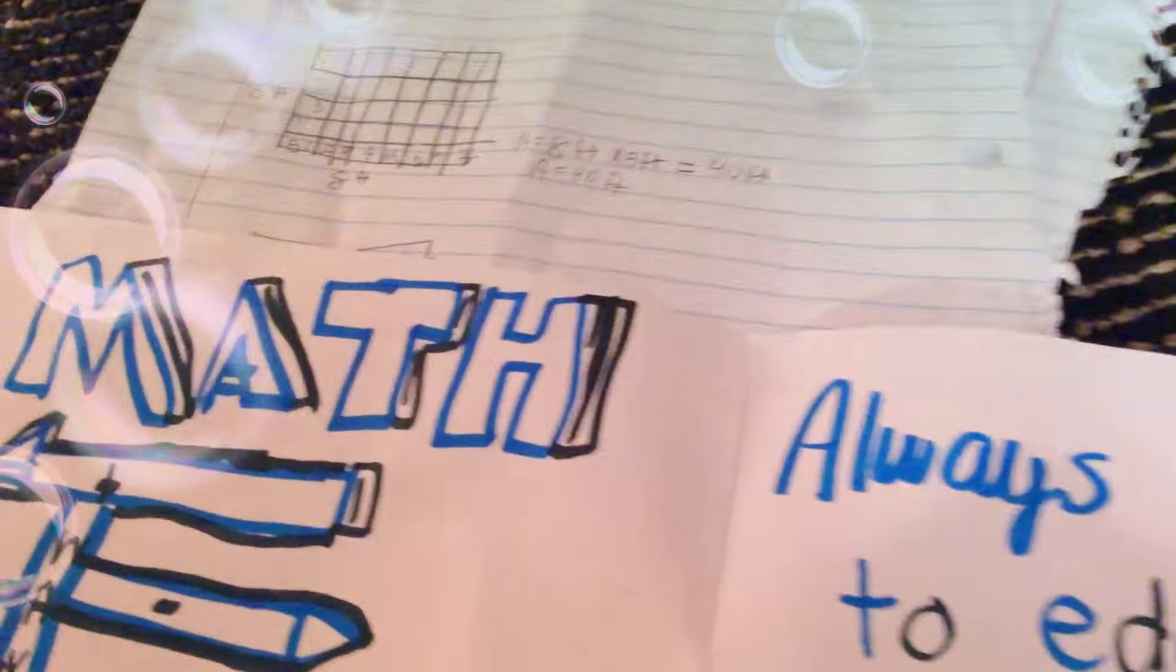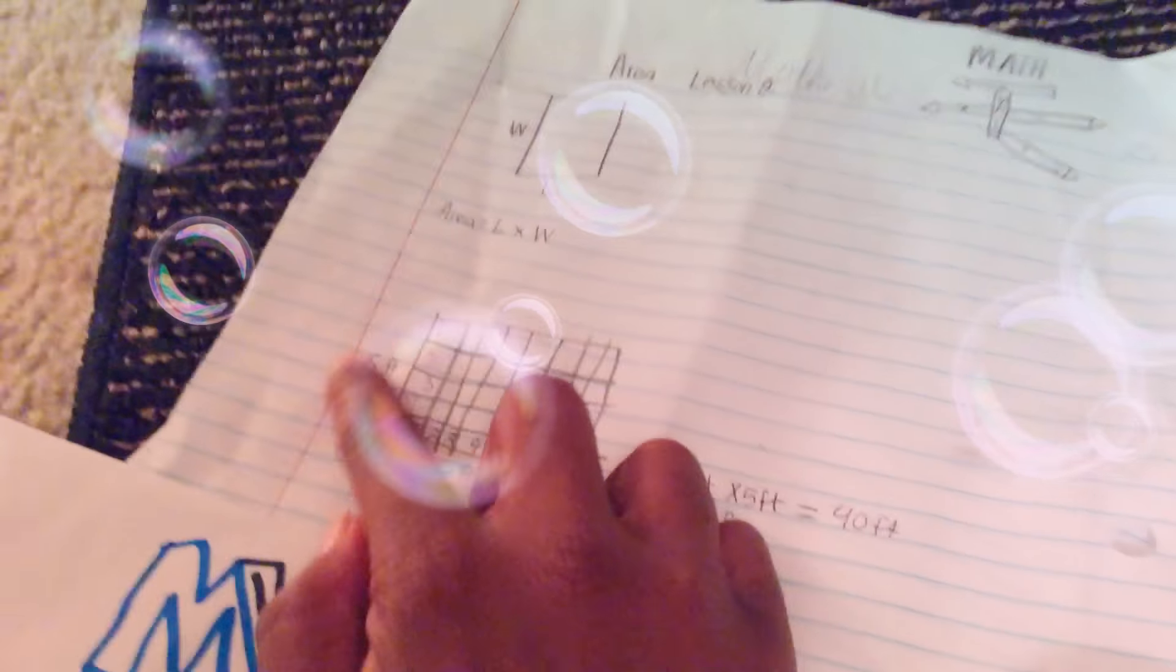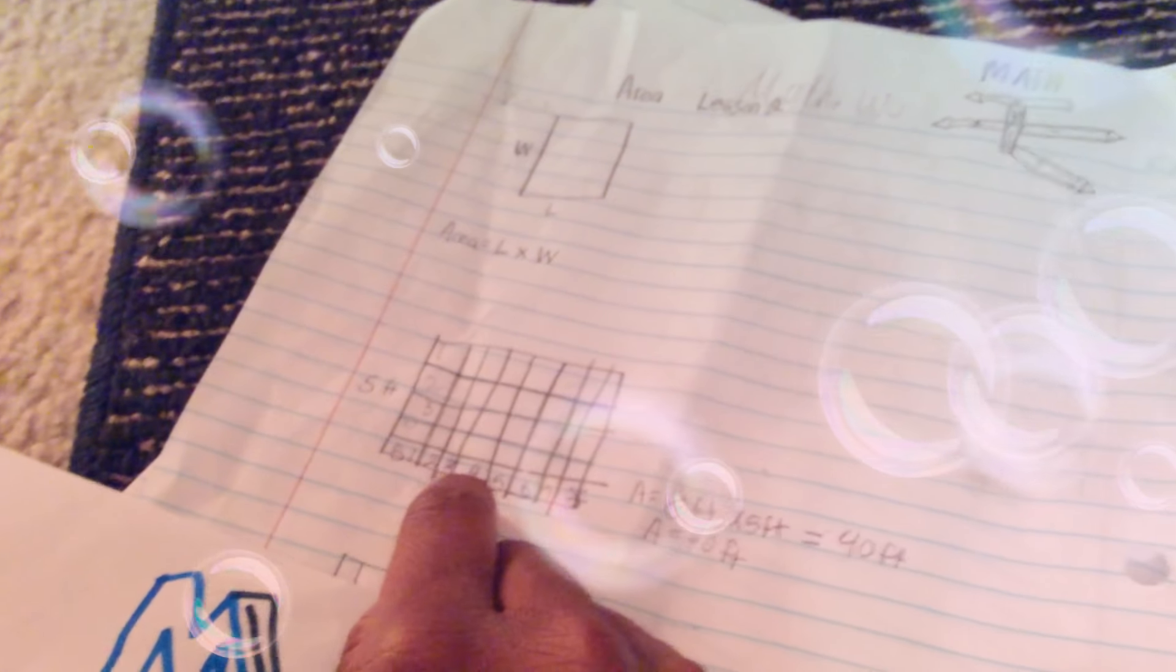Let's see one example. Alright, so first we count the squares. 1, 2, 3, 4, 5. So 5 feet. And this is 1, 2, 3, 4, 5, 6, 8 feet.